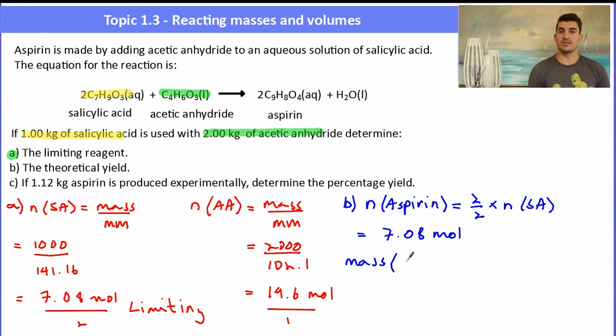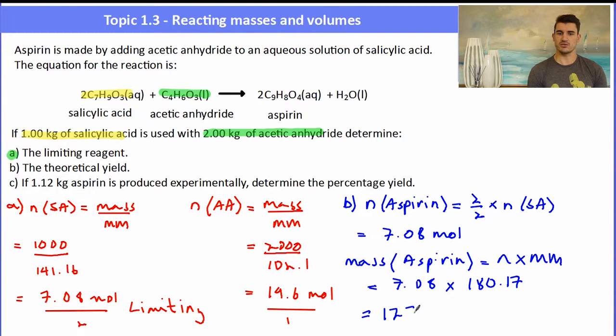To work out our theoretical yield, we would need to do mass equals mole times molar mass. We need to know how much we would produce, so we have our moles - 7.08 moles of aspirin would be produced - and we multiply that by the molar mass, which is 180.17, giving us a mass of 1,276 grams, which is the same as 1.28 kilograms. This is our theoretical yield: if all of the salicylic acid turned into aspirin, we would expect to get 1.28 kilograms.